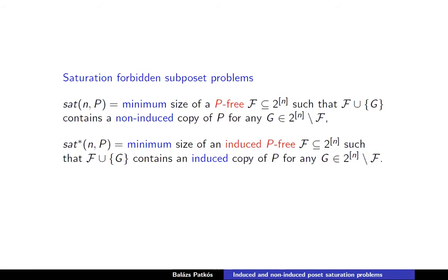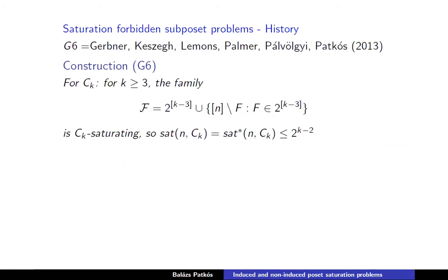Now let's look at the saturation version, the real topic of today's talk. We are interested in two functions: the non-induced saturation function Sat(n, P) and the induced saturation function Sat*(n, P). We are looking for the minimum size of a P-free family such that whenever we add a set not belonging to this family, a copy of P — or an induced copy in the starred version — is created.